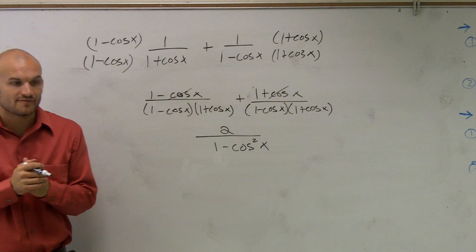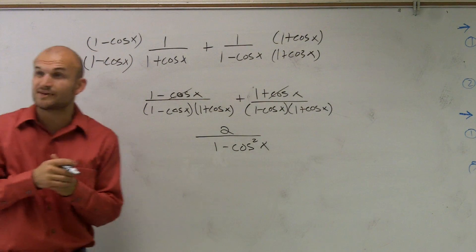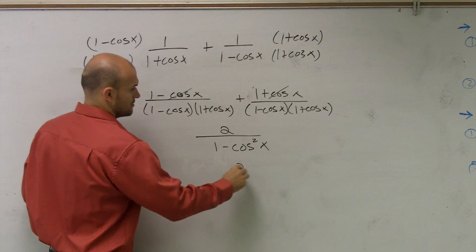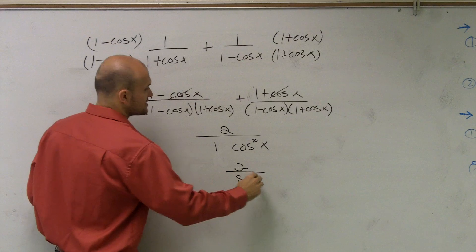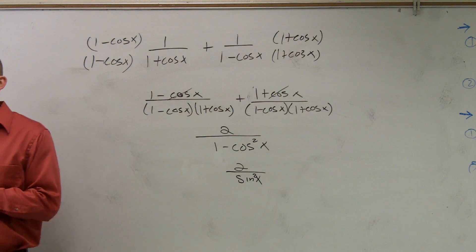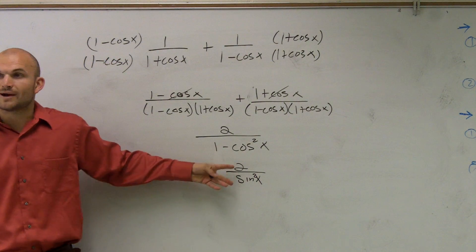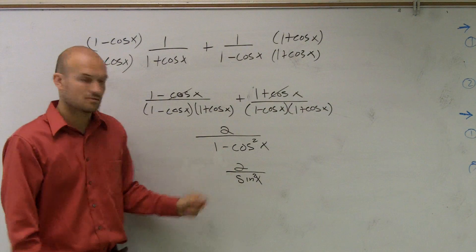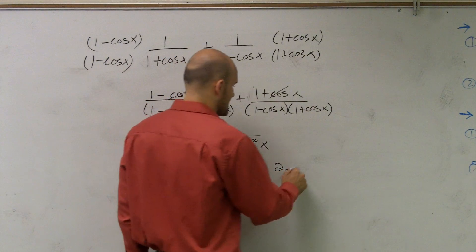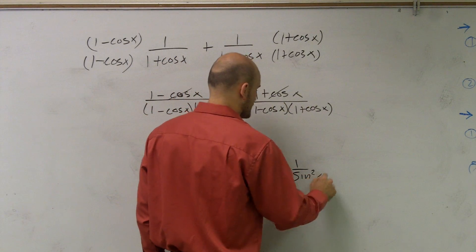Right, so 1 minus cosine squared of x is going to produce you sine squared of x. And then, to rewrite this without a fraction, maybe 2 times 1 over sine squared of x.